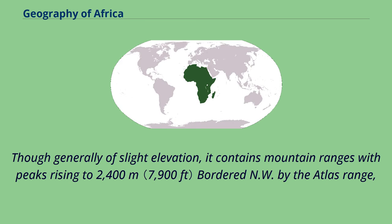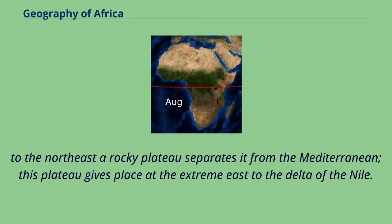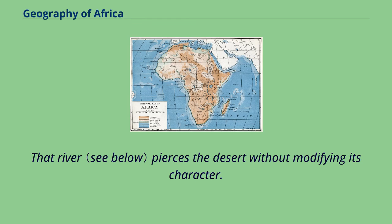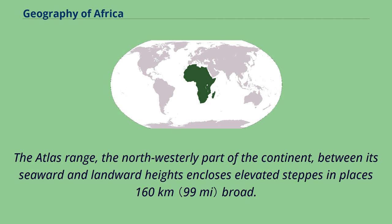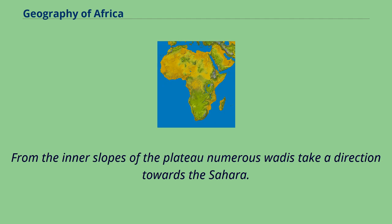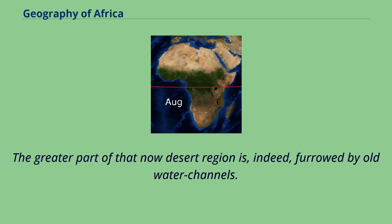Though generally of slight elevation, the Sahara contains mountain ranges with peaks rising to 2,400 meters, bordered to the northwest by the Atlas Range. To the northeast a rocky plateau separates it from the Mediterranean; this plateau gives place at the extreme east to the delta of the Nile, which pierces the desert without modifying its character. The Atlas Range, the northwesterly part of the continent, between its seaward and landward heights encloses elevated steppes in places 160 kilometers broad. From the inner slopes of the plateau numerous wadis take a direction towards the Sahara, and that now desert region is furrowed by old water channels.